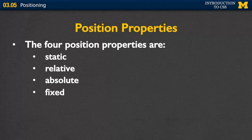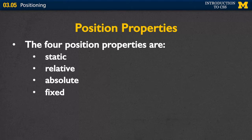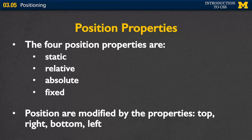The four position properties are static, relative, absolute, and fixed. For the most part, they're very different. How they work is that each one of these can also be modified by properties such as top, right, bottom, and left. So you say what kind of position you want the element to be, and then you can say you want it to be this far from the top, or this high off the bottom, or this far over from the left.